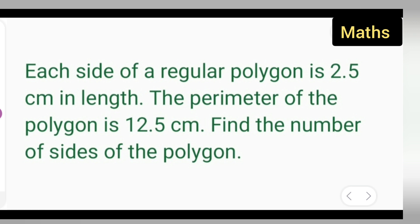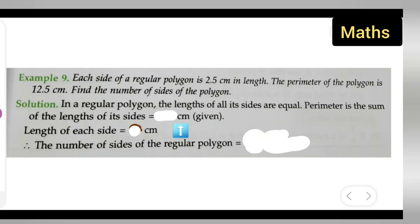The length is given and the perimeter is given. You'll have to find the number of sides of the polygon. So what is given to you? Each side of a regular polygon is 2.5 centimeters in length. The perimeter of the polygon is 12.5 centimeters. The length is given and the perimeter is given. You'll have to find the number of sides.